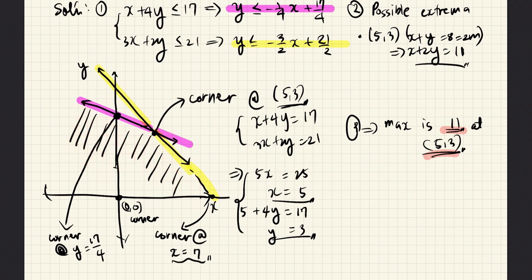For step 2 we will look for the possible extrema, which occur at the corners of the area that is bounded by these lines. And there is only one corner here, and that is this point. So if a maximum exists, that maximum will occur here if this point satisfies all the other conditions.